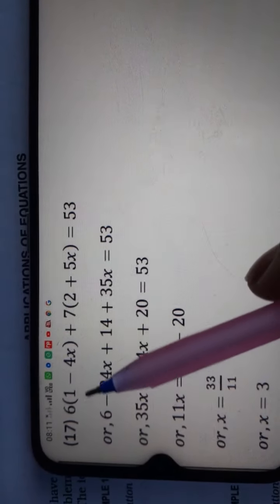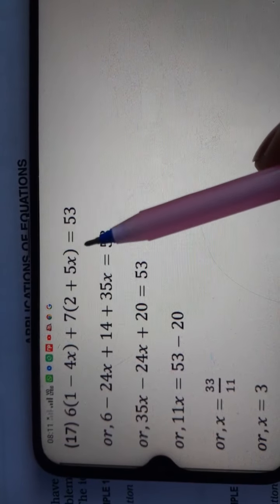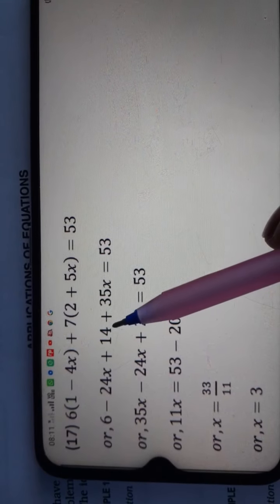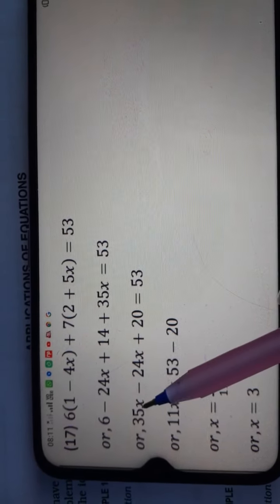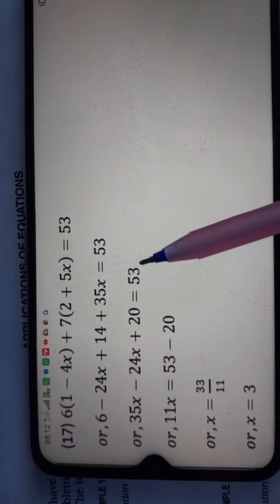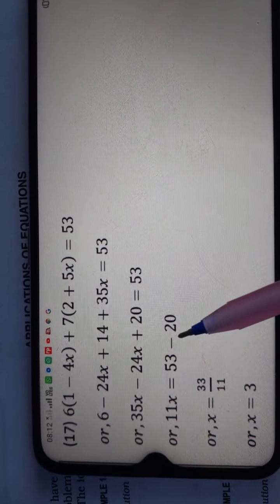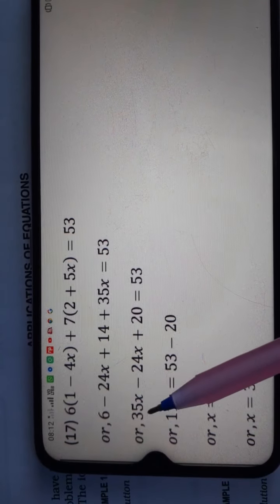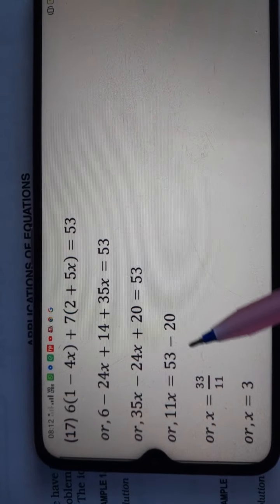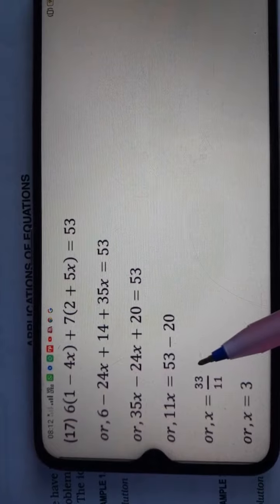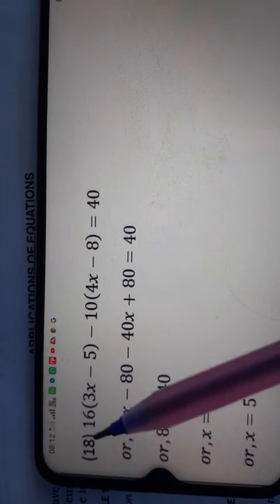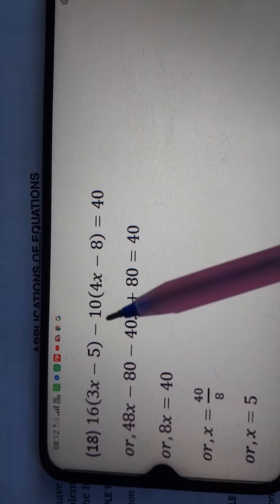Question number 17: 6(1 minus 4x) plus 7(2 plus 5x) is equal to 53. Opening brackets: 6 minus 24x plus 14 plus 35x is equal to 53. Collecting like terms: 14 plus 6 is 20, and 35x minus 24x is 11x. Changing side: 53 minus 20 is 33. Dividing 33 by 11 gives x is equal to 3.